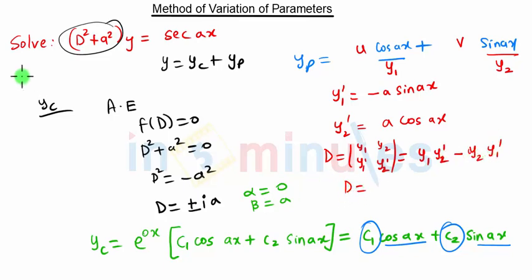So we calculate D as y₁ times y₂'. y₁ is cos(ax) and y₂' is a cos(ax), so it will be a cos²(ax). This minus and this minus will become plus, and this a sin(ax) times sin(ax) will become a sin²(ax).